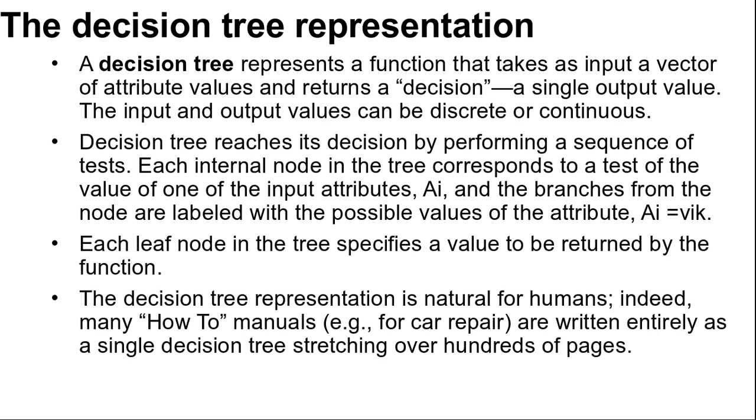So Ai and the branches from the node are labeled with the possible values of the attributes. Ai is equal to Vik. Each leaf node in the tree specifies a value to be returned by the function.